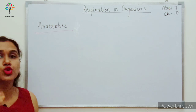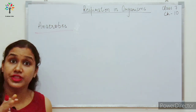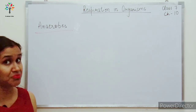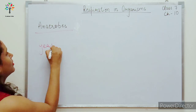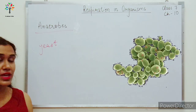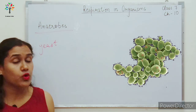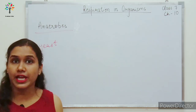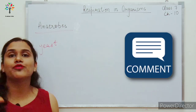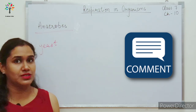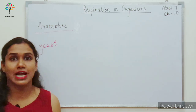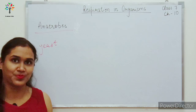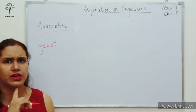Anaerobes are those organisms which can survive without oxygen. Your homework today is to give four examples of anaerobes — organisms which do not need oxygen and break down food in the absence of oxygen. For example, yeast, and certain bacteria which can survive without oxygen.